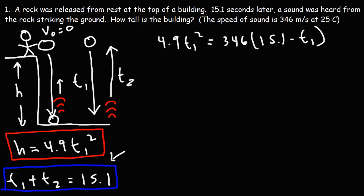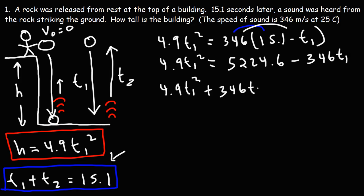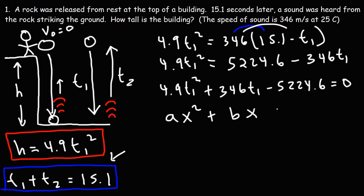Now let's solve for T1. First, distribute the 346: 346 times 15.1 equals 5224.6, so we get 4.9 T1 squared equals 5224.6 minus 346 T1. Moving all terms to the left side puts this in standard quadratic form: 4.9 T1 squared plus 346 T1 minus 5224.6 equals zero. This matches ax squared plus bx plus c equals zero, where a equals 4.9, b equals 346, and c equals negative 5224.6.